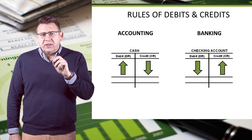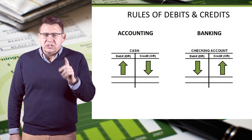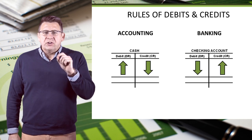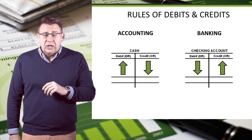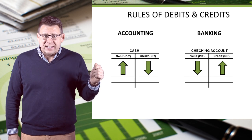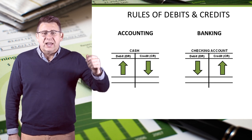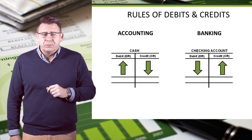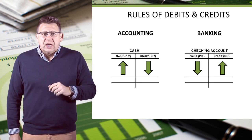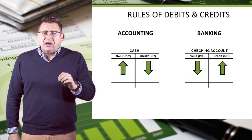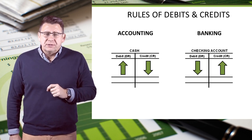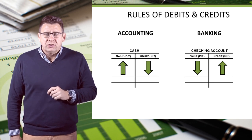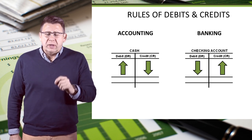Students who think the rules of debits and credits are backwards often refer to a banking example. In accounting, cash is an asset and assets are increased with debits. In banking, cash is decreased with a debit — the bank debits your account when you spend money.